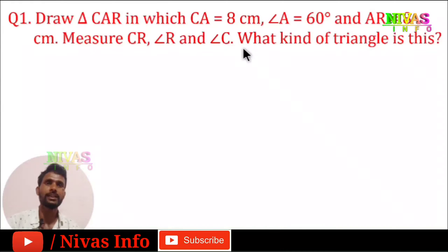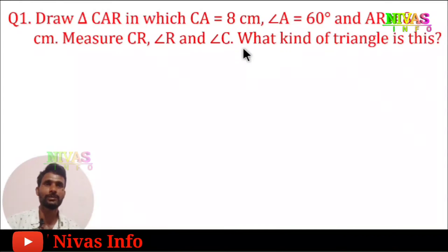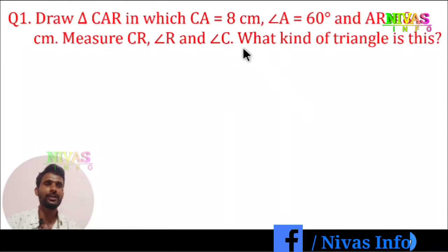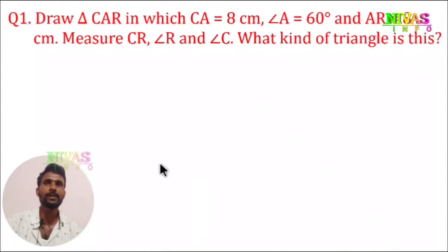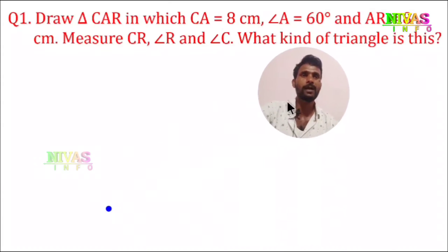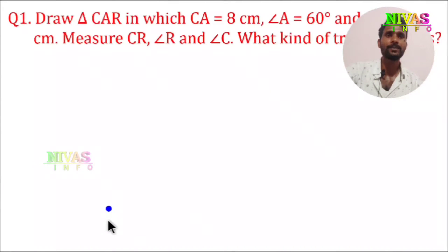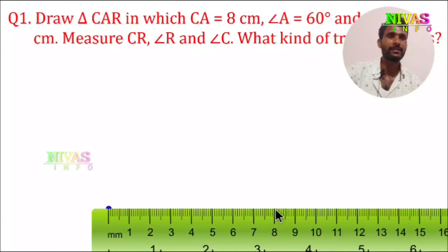First, we draw the triangle with points C, A, and R. CA is equal to 8 cm and AR is equal to 8 cm, and angle A is equal to 60 degrees. We find point C, then point A at 8 cm. We scale this to 8 cm. This is CA, so this is 8 cm in length.